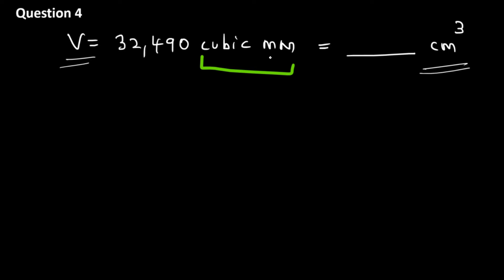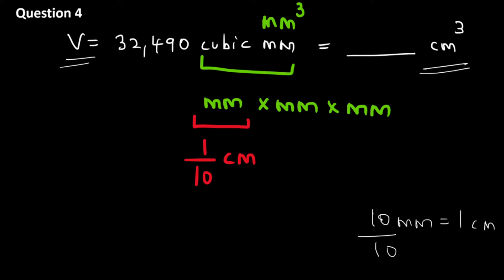Now what does cubic millimeter mean? It means millimeter into millimeter into millimeter. So we also write this as millimeter to the power three or millimeter cube. Now one millimeter is equal to one by ten of a centimeter. Why is that so? That's because 10 millimeter is equal to one centimeter. Now if you divide the left hand side and the right hand side with 10 you get 10 by 10 and 1 by 10. This cancels out so you get one millimeter is equal to one by 10 of a centimeter.